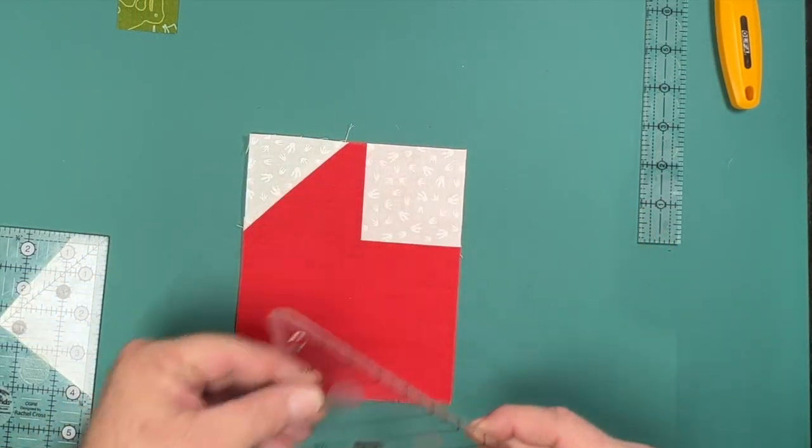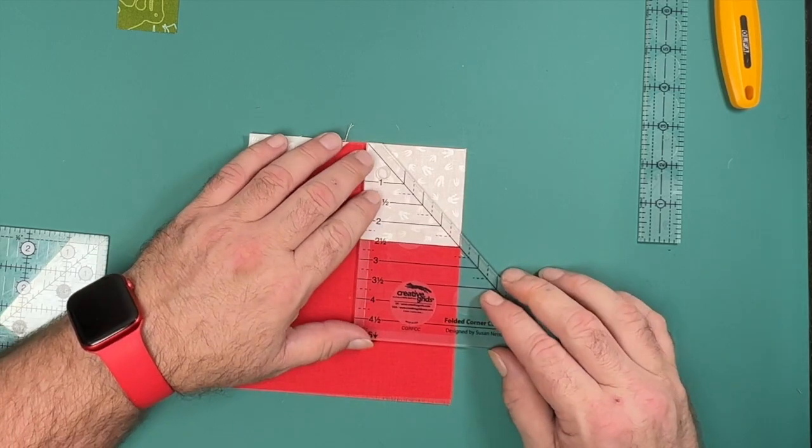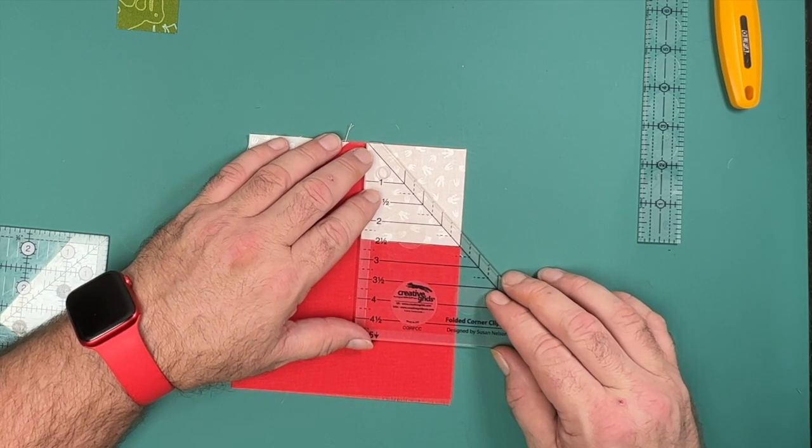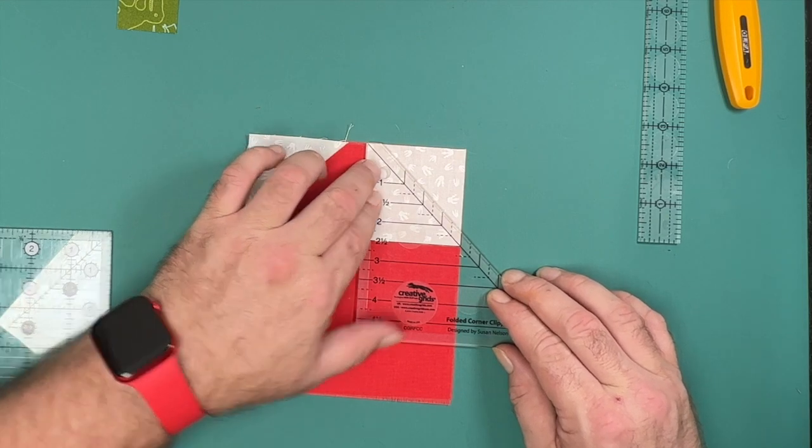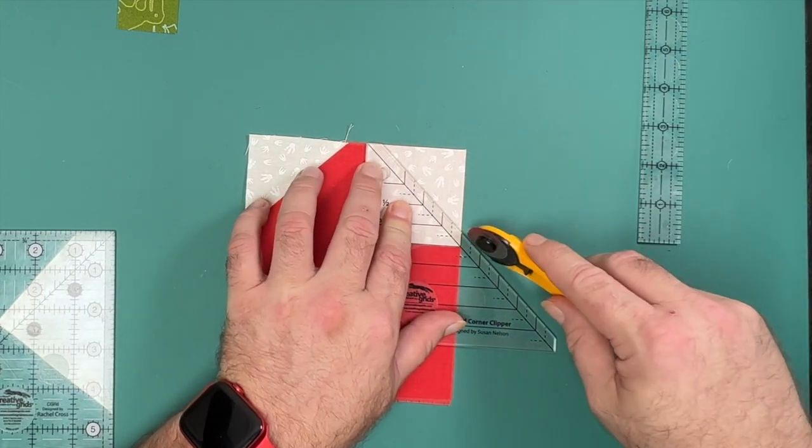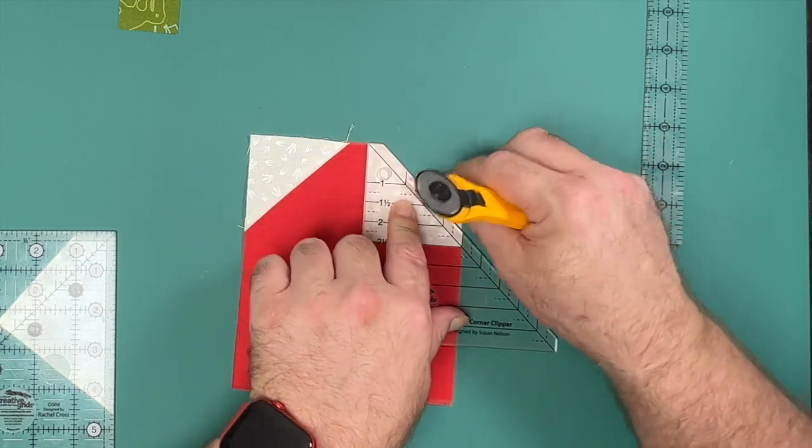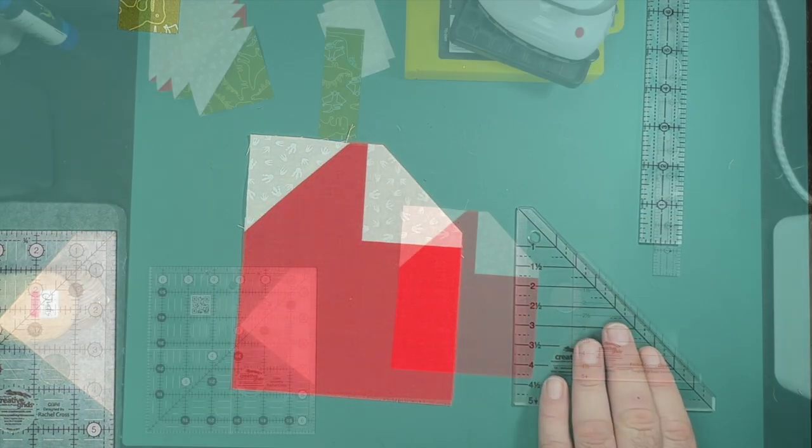The second sew and flip I'm going to do with the folded corner clipper. You can see here to do this, we place our square on and then line up the measurement of the small square with the folded corner clipper tool before removing the fabric and taking it to the machine and sewing a quarter of an inch.